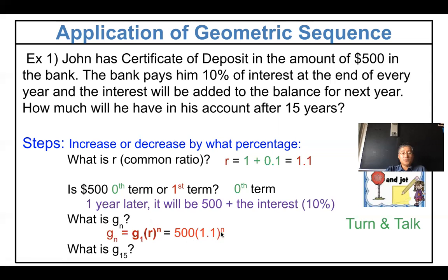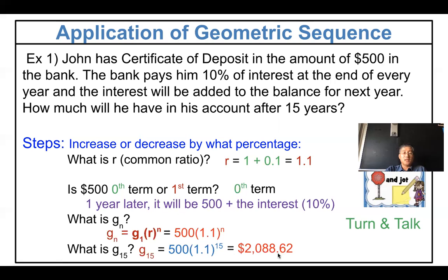The formula is g(n) = 500 times 1.1 to the n power. To find g(15), plug 15 in for n and use a calculator. The answer is $2,088.62. So the key is identifying whether the given number is the first term or the zero term — that determines whether you use n minus one or n as the exponent. You can compare with the last lesson for reference.